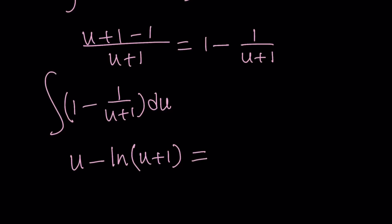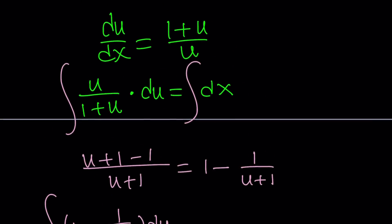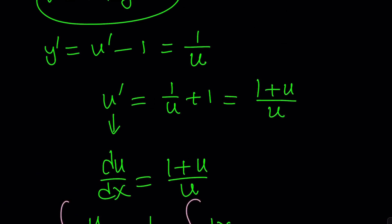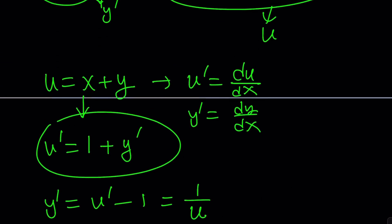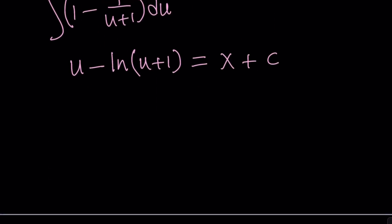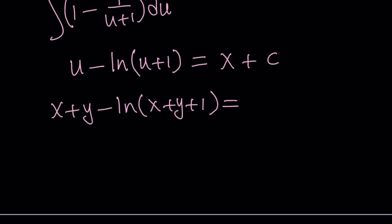Set that equal to what? The integral of dx is x plus a constant. Now what is u? We have to back-substitute. u is x plus y, so we replace u with x plus y and we get x plus y minus ln of x plus y plus 1 equals x plus c, where c is a constant.